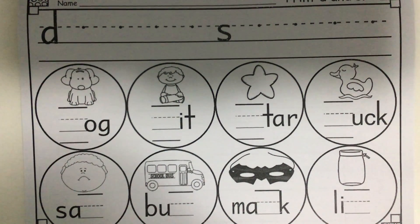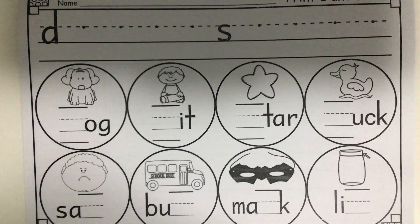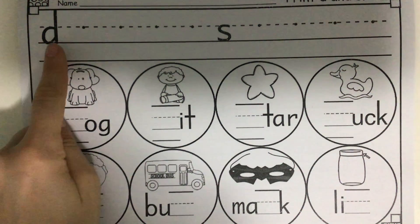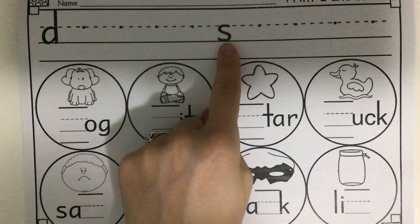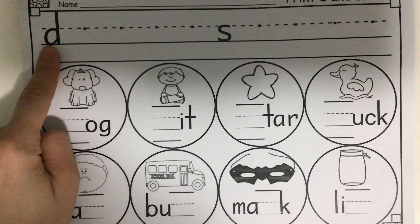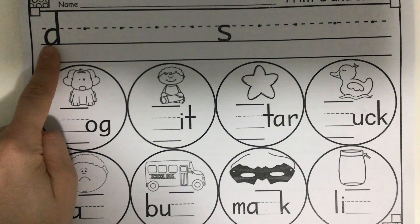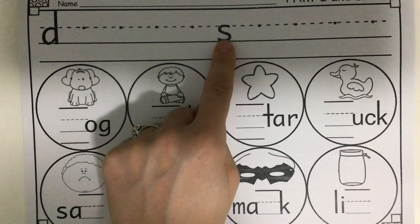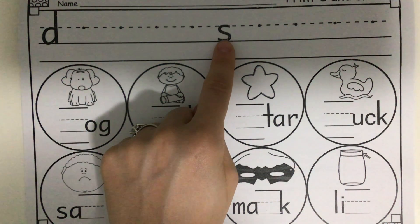Hi boys and girls, today we're going to practice listening for our sounds of the week. This week we learned two different letters, the letter D and the letter S. The letter D makes the sound D, just like in D, dog, D. The letter S makes the sound S, like in S, snake, S.